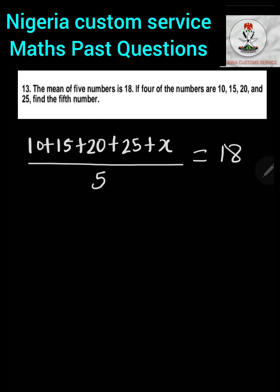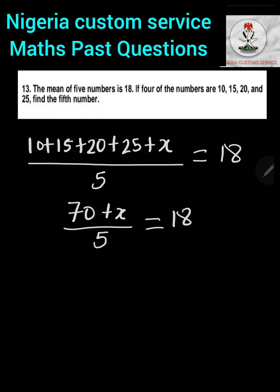These are the five numbers and to get the mean we sum all and divide by how many appear. We sum the known constants: 10 + 15 + 20 + 25 equals 70. So we have (70 + x) over 5 equals 18. Cross-multiplying gives 70 + x equals 5 times 18, which is 90.